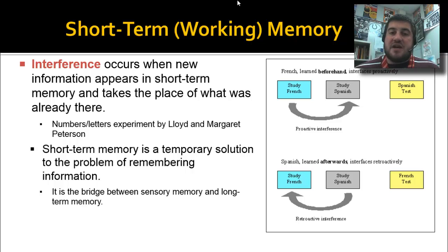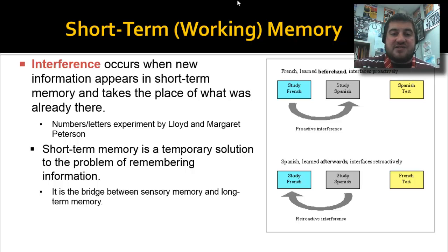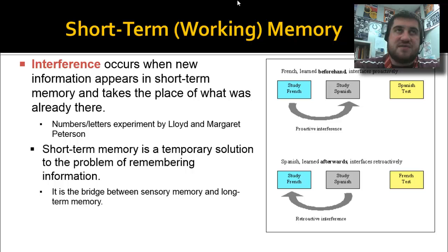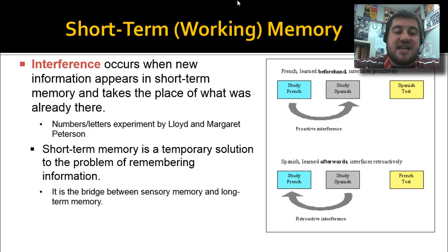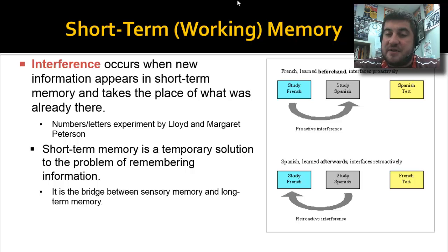Short-term memory is also subject to something called interference, which occurs when so much information comes in that new information pushes old information out of short-term memory and it's forgotten. In the Peterson and Peterson experiment, college students were given a set of numbers to remember and then had to count backwards from 247 by fours — something requiring concentration — and then tried to recall the numbers; most could not do it. Short-term memory is our brain's temporary solution between sensory memory and long-term memory. There are two types — proactive and retroactive interference — but the key is understanding what interference is.